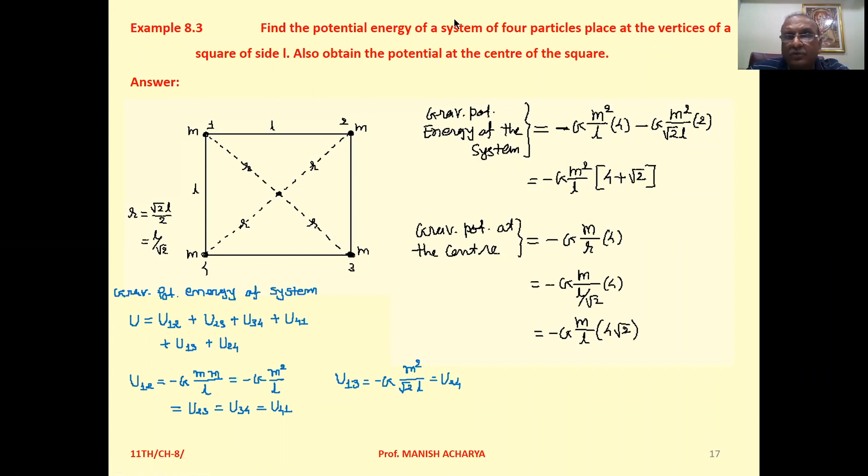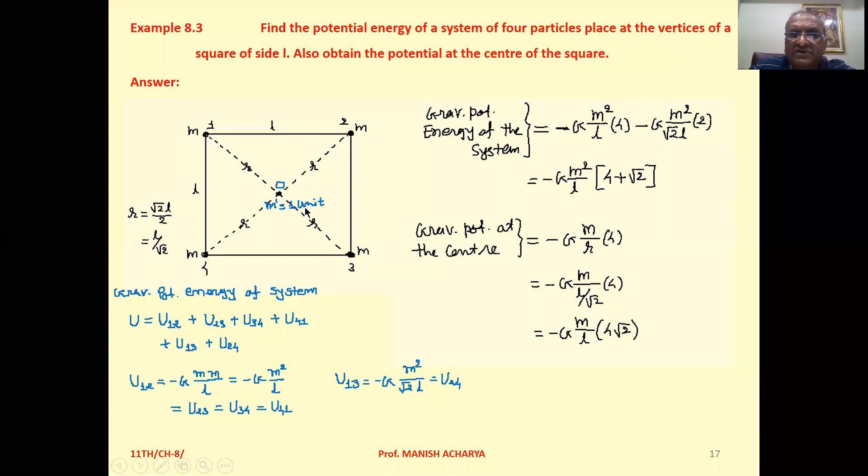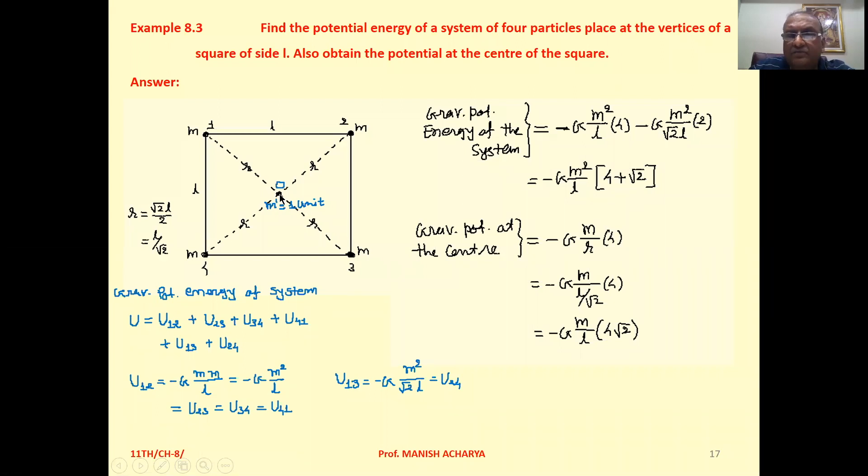Now gravitational potential at the center of the square. To calculate the gravitational potential at the center, place unit mass at the center and then calculate the potential energy for this unit mass.